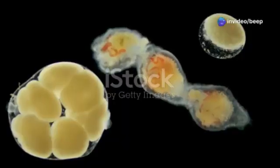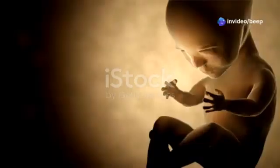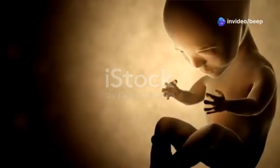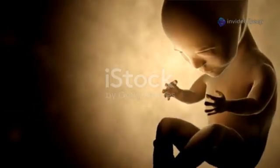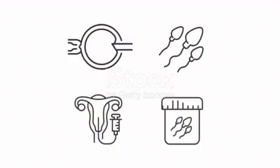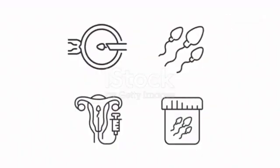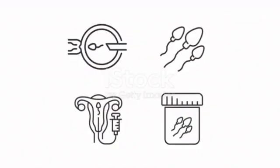Around day six or seven the blastocyst attaches to the lining of the uterus, a process called implantation. The trophoblast cells burrow into the uterine wall, anchoring the blastocyst securely. This connection allows for the exchange of nutrients, oxygen, and waste products. Once implanted, the blastocyst continues to grow and develop.